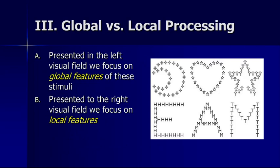The final topic is some interesting work on visual field and global versus local processing. These are called Navon figures — you can see H's forming an E, and M's forming an A, along with figures like pluses, a moon, stars, and a heart. If you present these figures to the left visual field — left of fixation, going to the right hemisphere — participants will identify the global features: the moon, the E, the A, the heart, the star. If we present them to the right visual field, going to the left hemisphere, we get a focus on local features. This tells us something about how the brain accomplishes pattern recognition by looking at local versus global features.